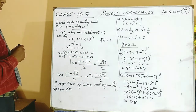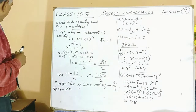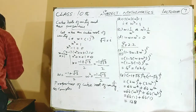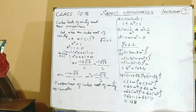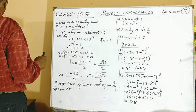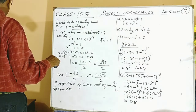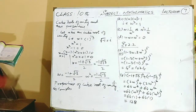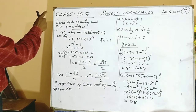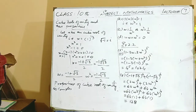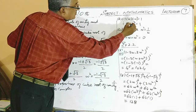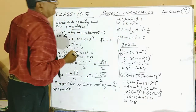Now we will discuss the properties of cube roots of unity. First property, as mentioned in your book at page 23: each complex cube root of unity is the square of the other. Second property — very interesting and very useful in your questions — is that the product of cube roots of unity is equal to 1. In other words, omega³ = 1. This is a very important, useful property.